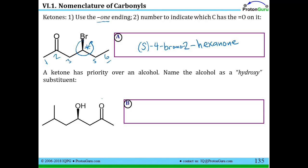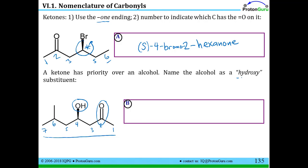The ketone functional group has priority over the OH for getting the lowest number in the parent chain and for the last suffix at the end of the name. So for a molecule with a ketone and an OH on a seven-carbon chain, the ending is 'one' — it's a heptanone. We need to incorporate the alcohol in the name as well, but since 'one' is the last suffix, we name the OH as a substituent: hydroxy. This gives us 4-hydroxy-2-heptanone.